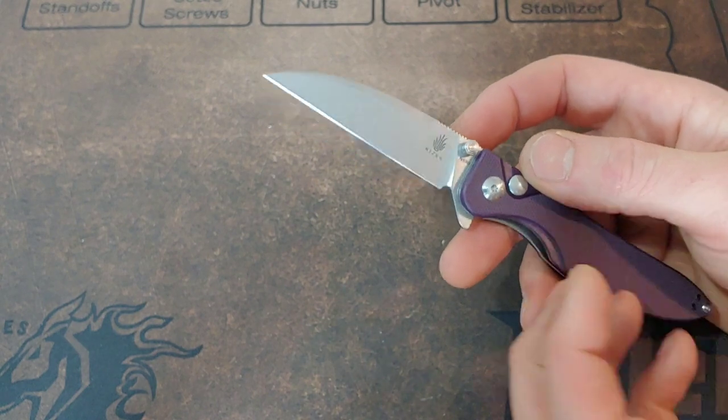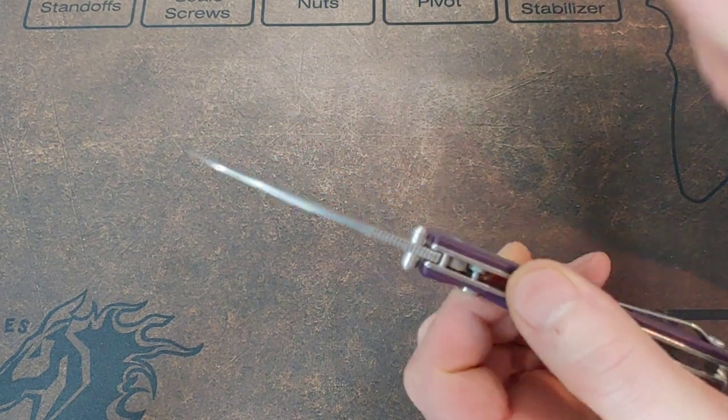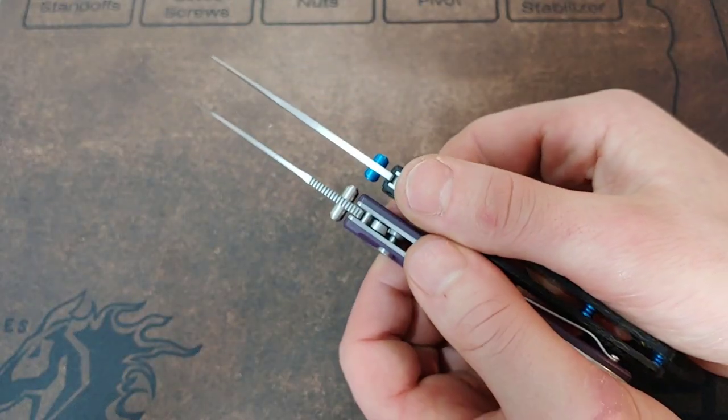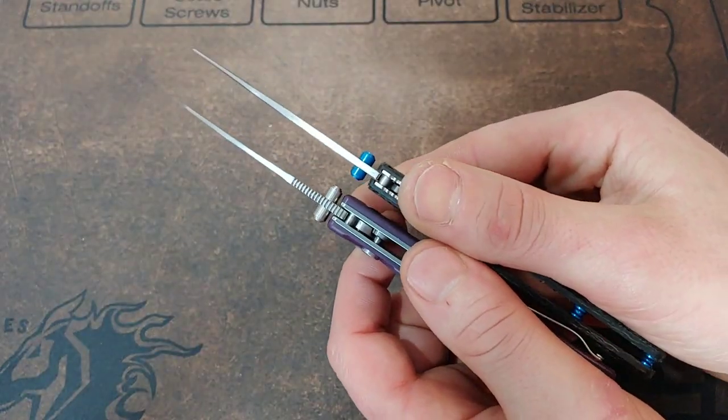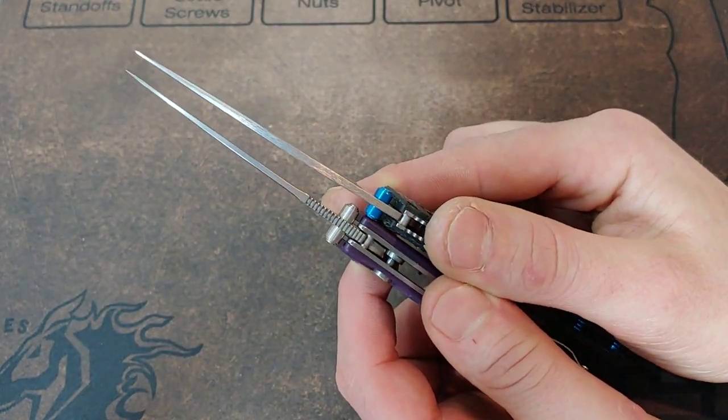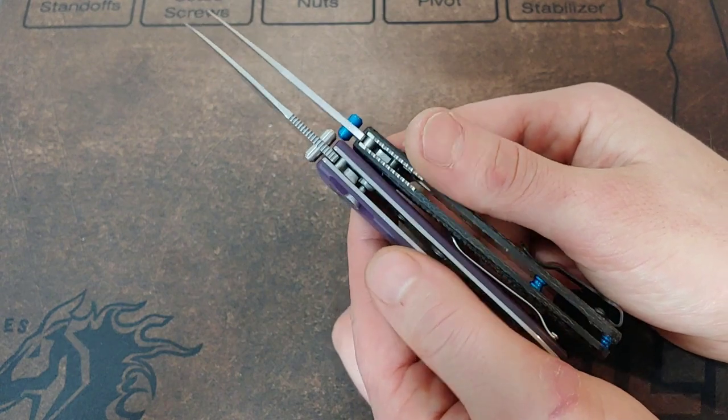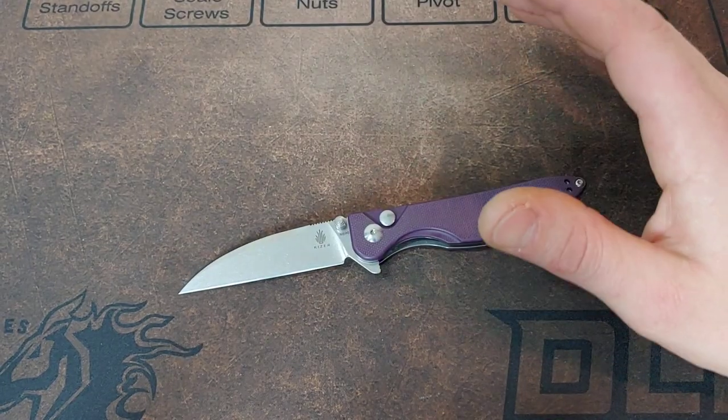Now, before we talk about sharpening it, let's look at the thickness of this blade. Look at it compared to the Benchmade Bugout. You can see how thin it really is. It's a very, very thin blade.